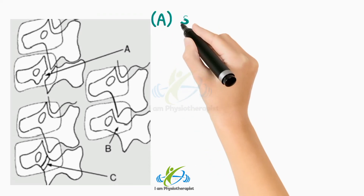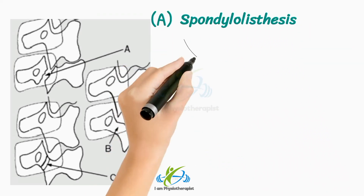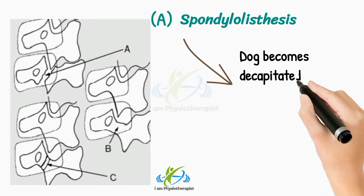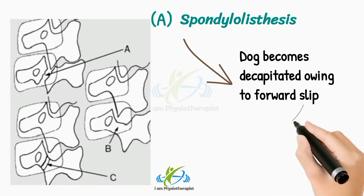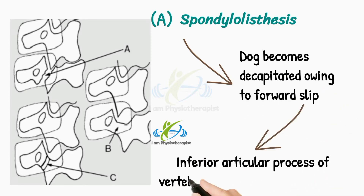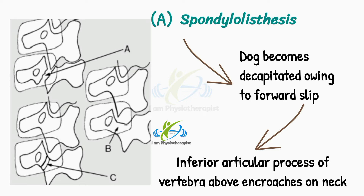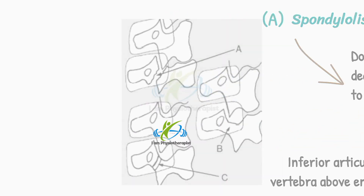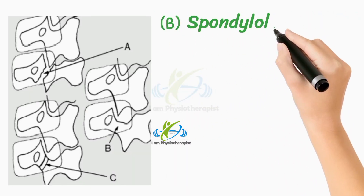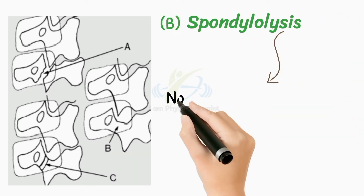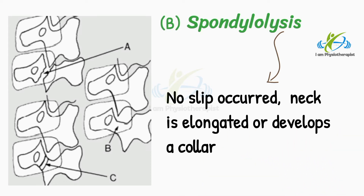In spondylolysis, indicated by point A, the dog becomes decapitated owing to forward slip, and the inferior articular process of the vertebra above encroaches on the neck. In spondylolysis where no slip has occurred, the neck is elongated as shown at point B, or develops a collar.